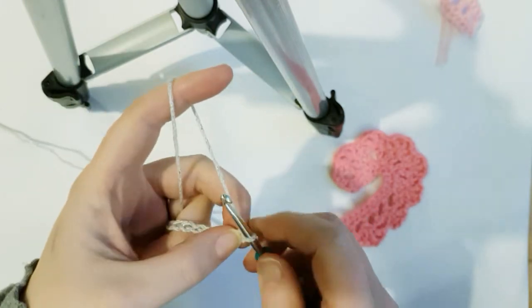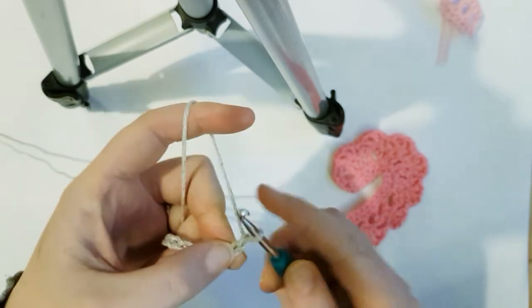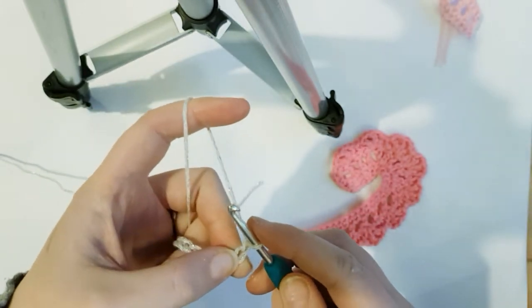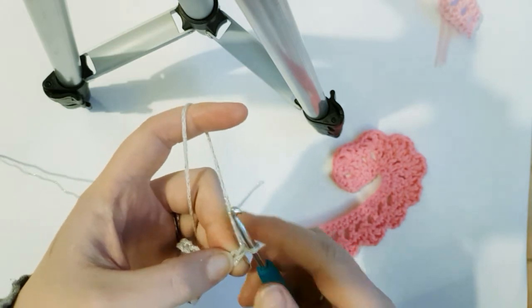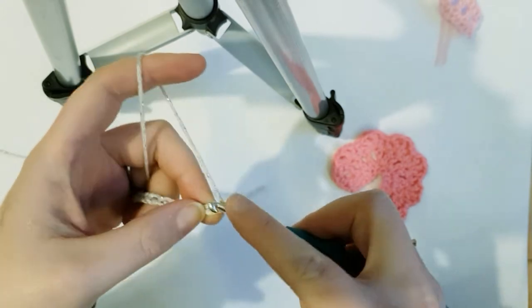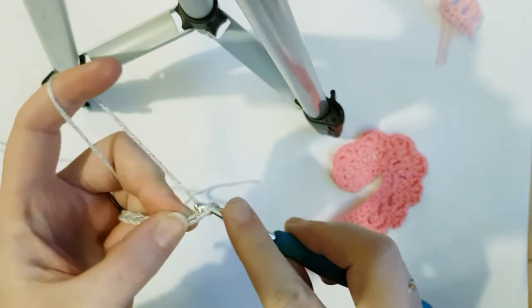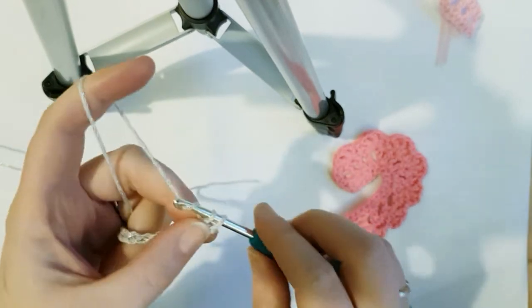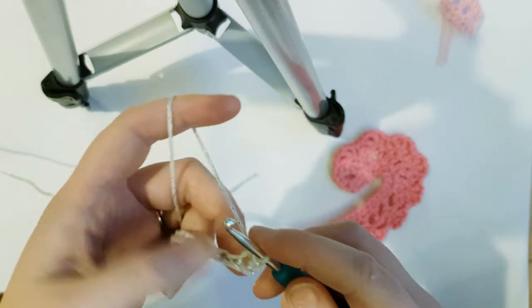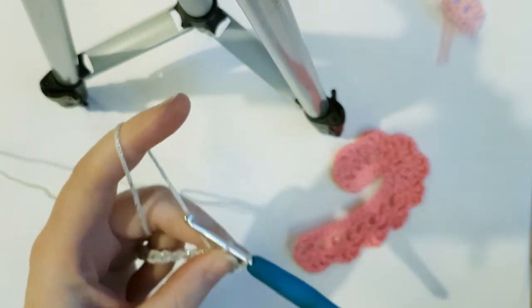So then once you've got your 25, or however many you are doing, chain one again, and then you are going to single crochet in every one of these chains to the end, so not the one that you've just made, but the 25th. So insert your hook, pull up a loop, and pull through two. So obviously that is single crochet in US terms, or it is double crochet in UK terms.